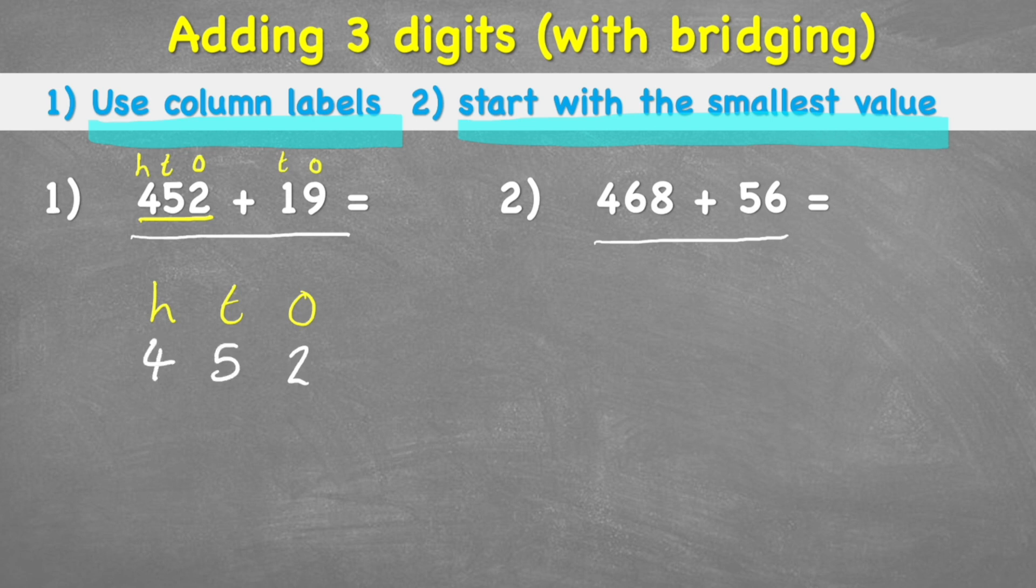Rather than making the mistake of putting the one and the nine here, which a lot of people do, I can see that my nine is in the ones column and my one is in the tens column. If that was a little bit tricky to understand, go back and watch that part again because this is really important for column addition. Now I can put my equals sign and my plus sign to remind me I'm doing addition.